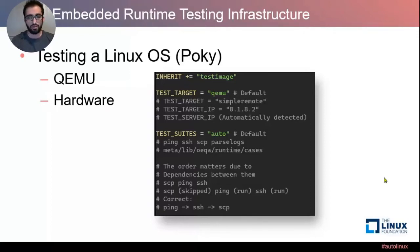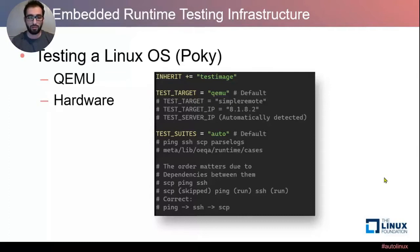It's important to note that the order of test suites matters because tests have dependencies between them. For example, if you put SCP, ping, SSH — SCP will be skipped because the SCP test depends on the ping test. The correct order would be: ping, then SSH, then SCP. That's how it works on Linux.